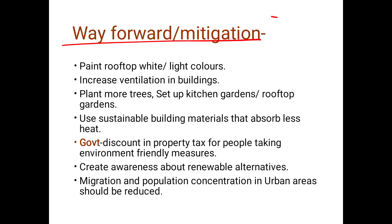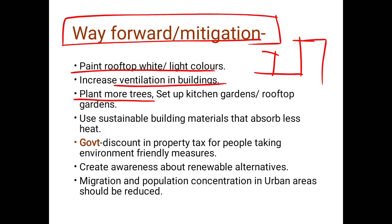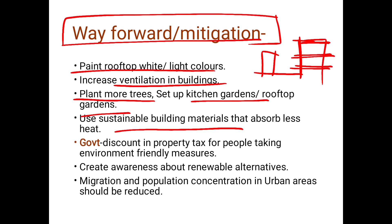To mitigate urban heat islands: paint rooftops with light or white colors to reduce heat absorption; increase building ventilation to reduce fan and AC use and lower electricity bills; plant more trees and plants. Where space is limited in urban areas, adopt vertical farming, rooftop gardens, or kitchen gardens. Also use sustainable building materials that absorb less heat.